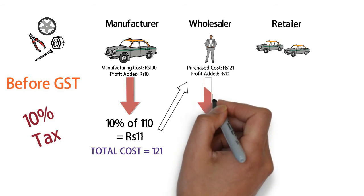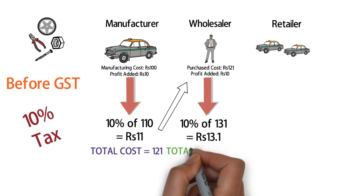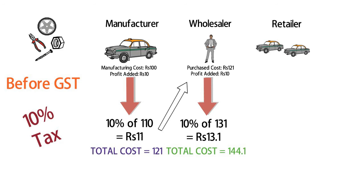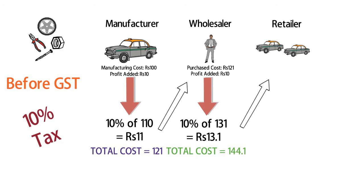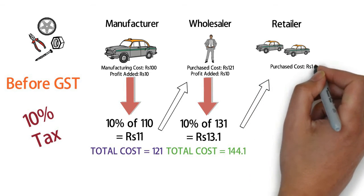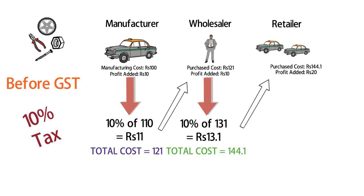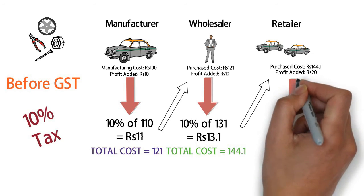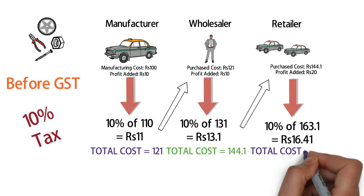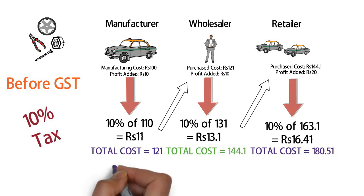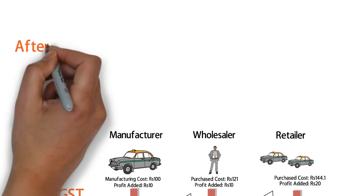The wholesaler buys the car for 121 rupees from the manufacturer and adds a profit of 10 rupees again. He also needs to pay a 10% tax on 131 rupees, so after adding taxes at this level the price of the car becomes 144.1 rupees. The retailer buys it for 144.1 rupees, adds 50 rupees as his profit, and pays 10% tax on 163 rupees, taking the price of the car to 180.51 rupees.